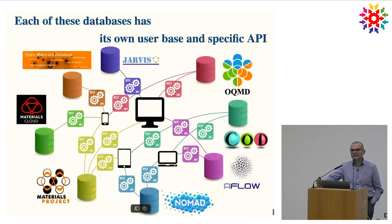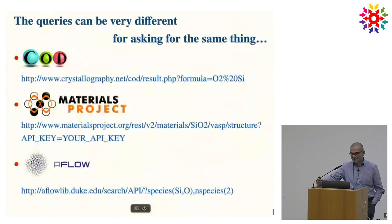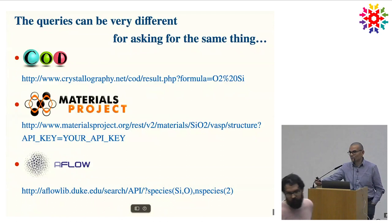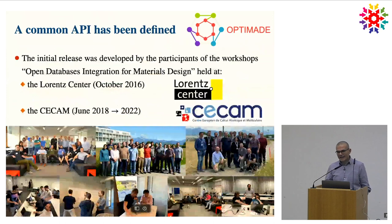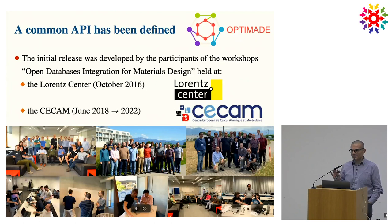If you want to query these databases, you need to learn the API to query that database. Some of you probably know the NOMAD API, but there are many different APIs and they look different. If you want to query for silicon dioxide in COD, the Materials Project, or in AFlow, the structure in which you have to phrase your request is very different from one database to another. Not only the query is different, but the response you get is also very different. So all the developers of these databases gathered at many different meetings from 2016 to 2022, and we designed a common API between all these databases.